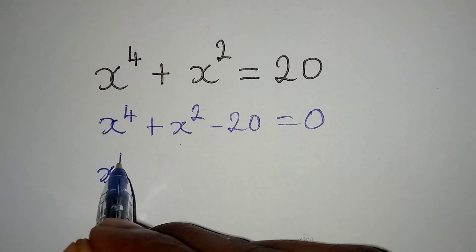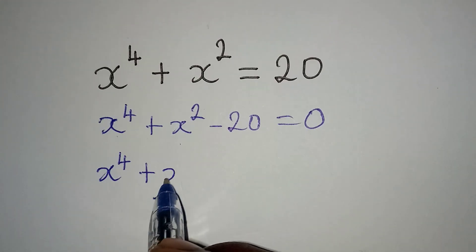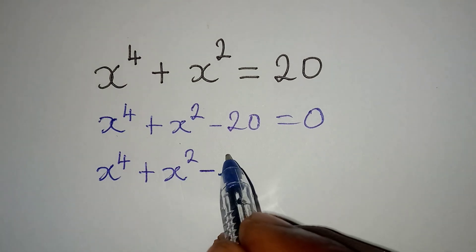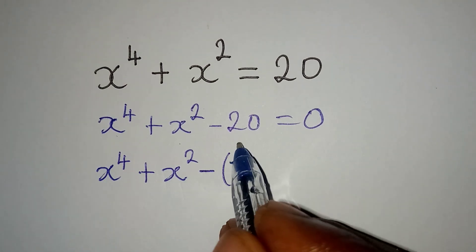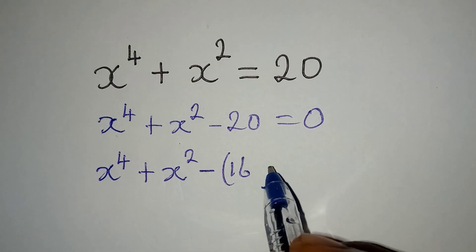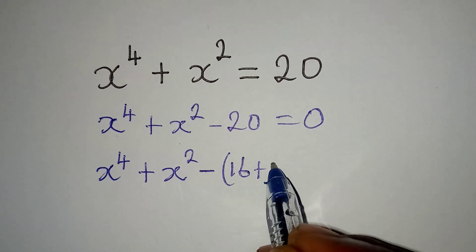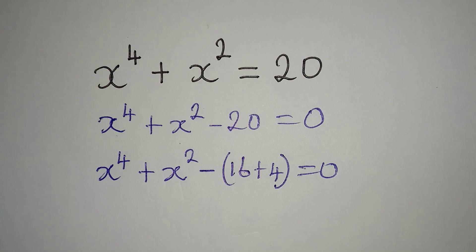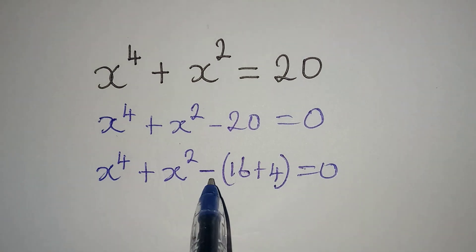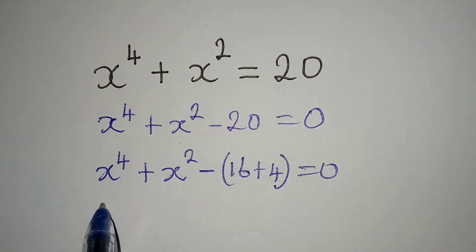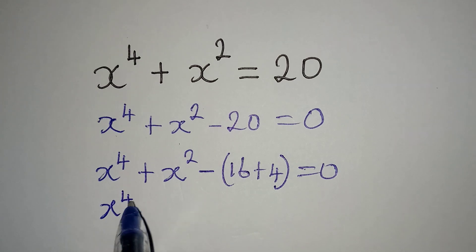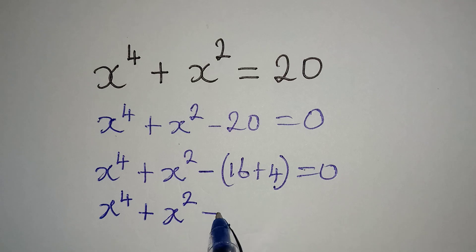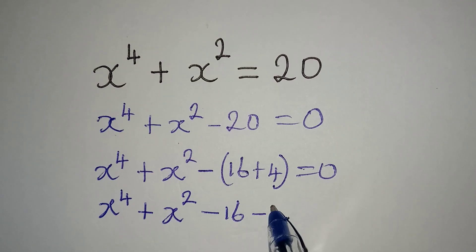Now what I want us to do is split this 20. I will have x to the power 4 plus x squared, then minus — open bracket — this 20 is the same thing as 16 plus 4, and this is equal to 0. The next thing I will do is open this bracket again.